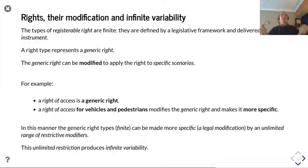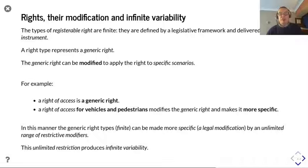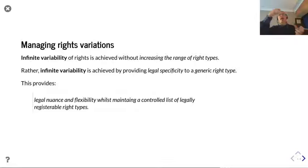This can lead to an unlimited range of restricted modifiers, and this unlimited restriction produces infinite variability. We are applying specific variations to known right types, and that allows us to tailor them to a whole range of different scenarios. We can expand on this by adding new right types to the range of different rights, and also maintain flexibility by having the specificity associated with each rights type. This gives us legal nuance and flexibility whilst maintaining a controlled list of legally registrable right types.